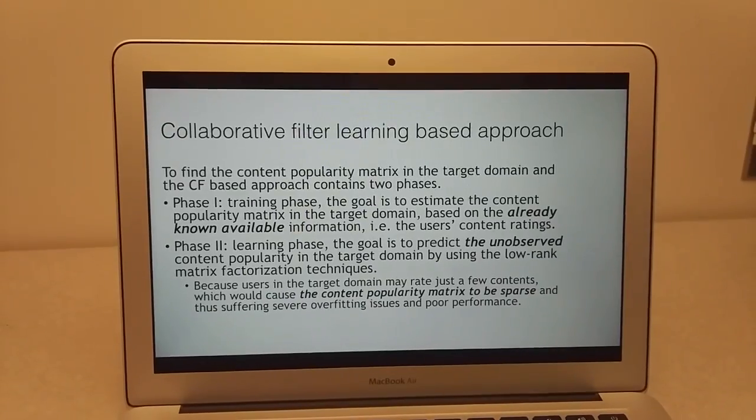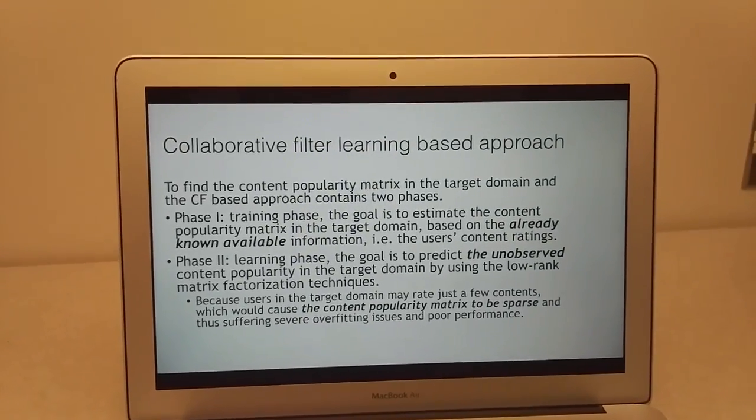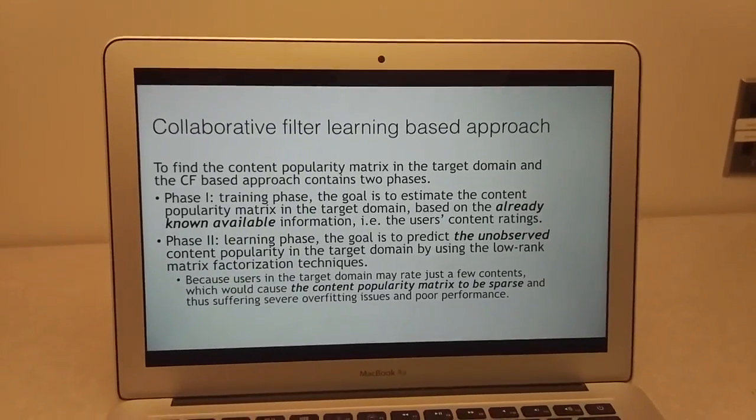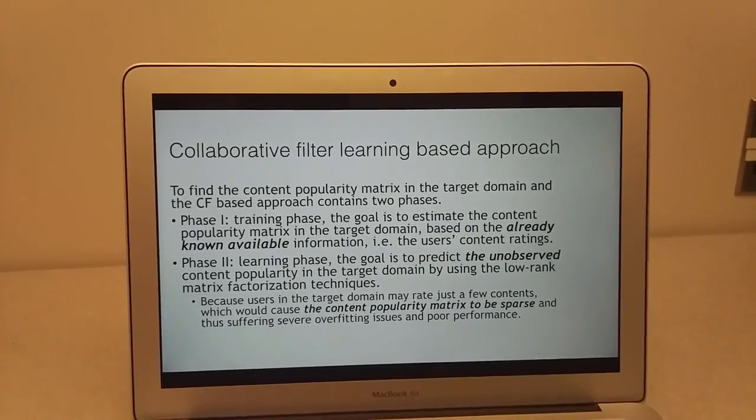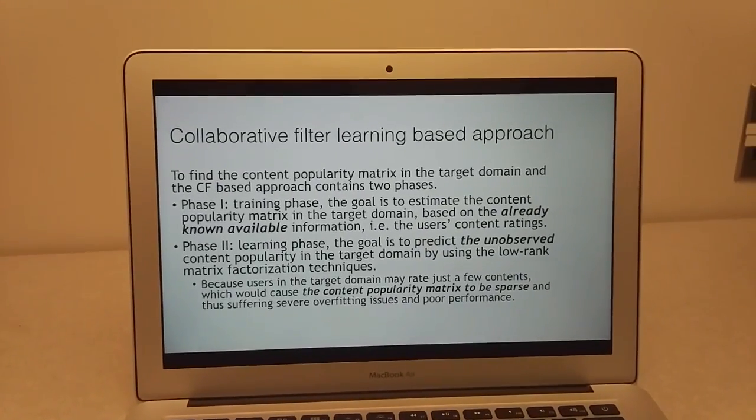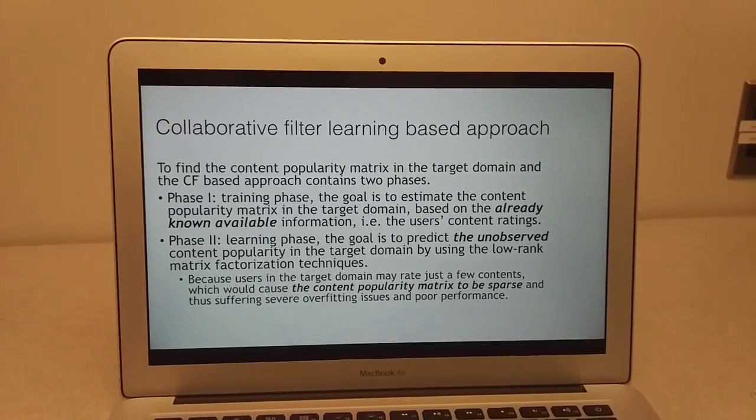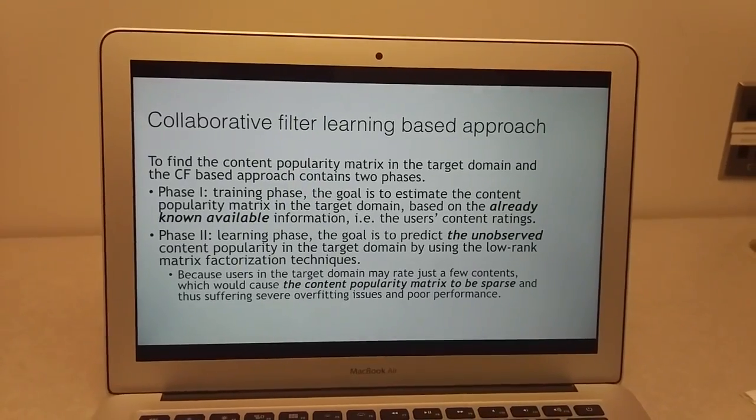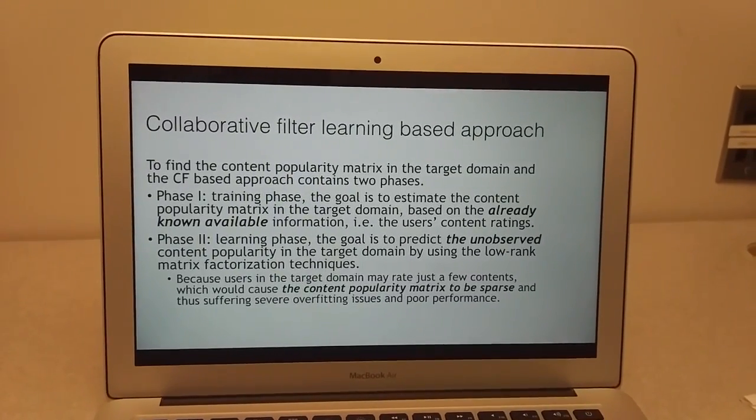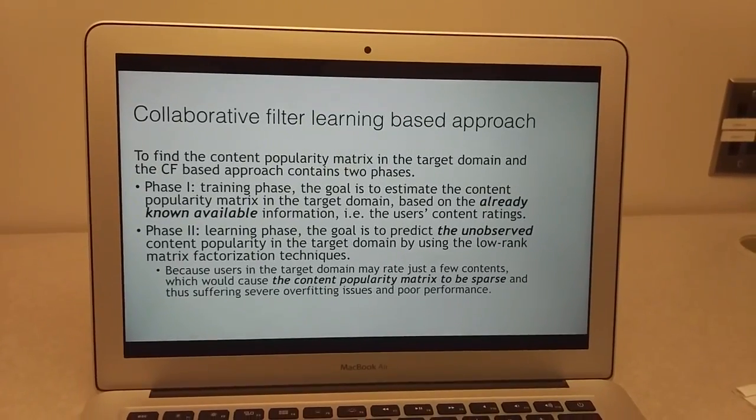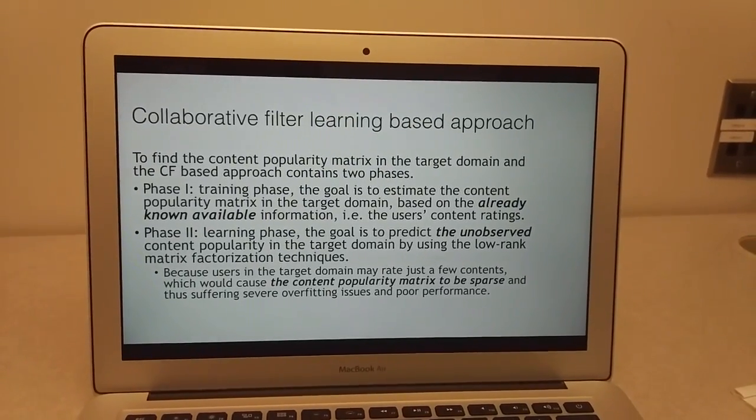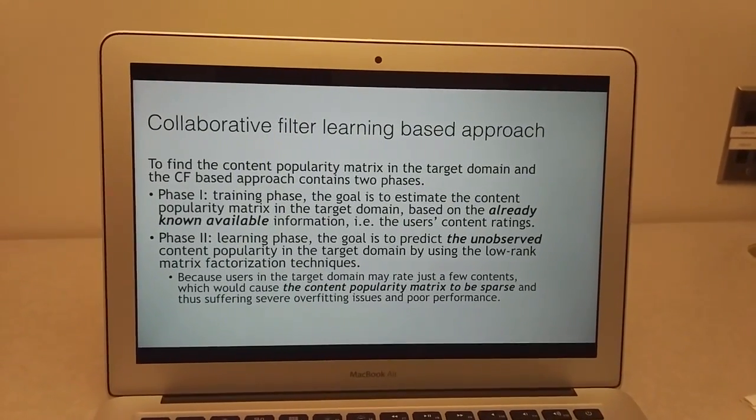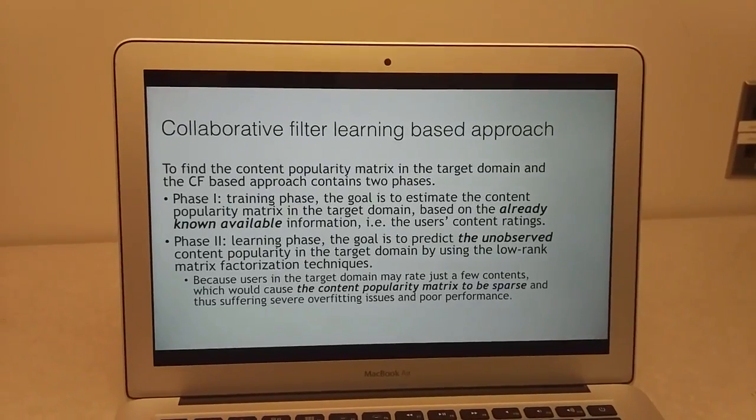In the prior literature work, a method named the collaborative filtering learning-based approach is proposed to find the content popularity matrix in the target domain. The collaborative filtering-based approach contains two phases. Phase one is the training phase, with the goal to estimate the content popularity matrix in the target domain based on already known available information, that is, the user's content readings.